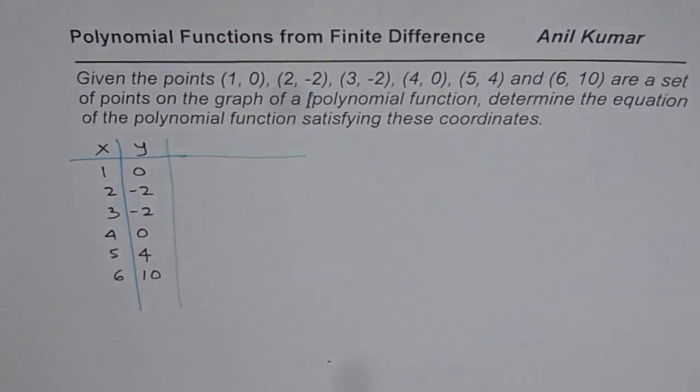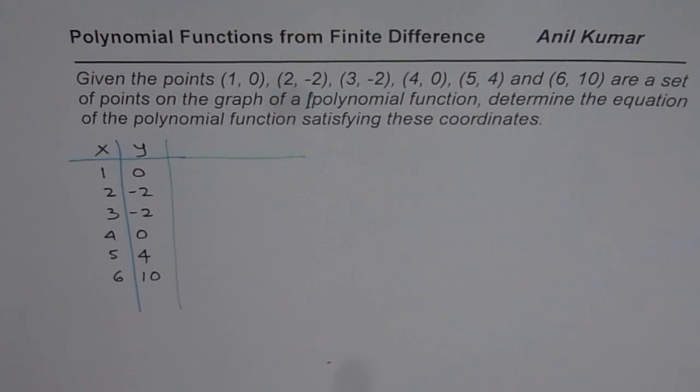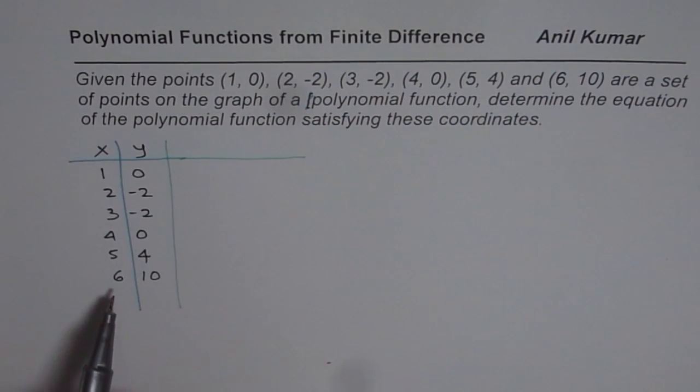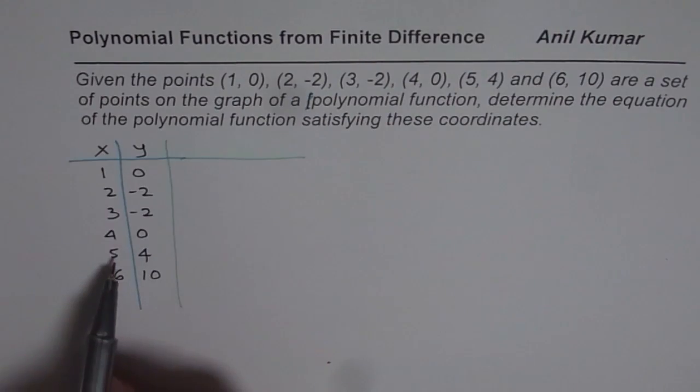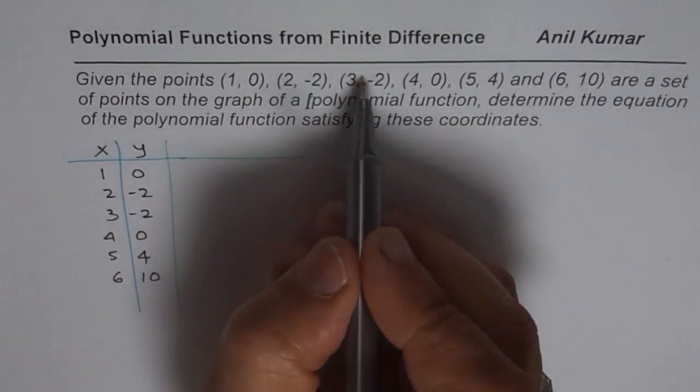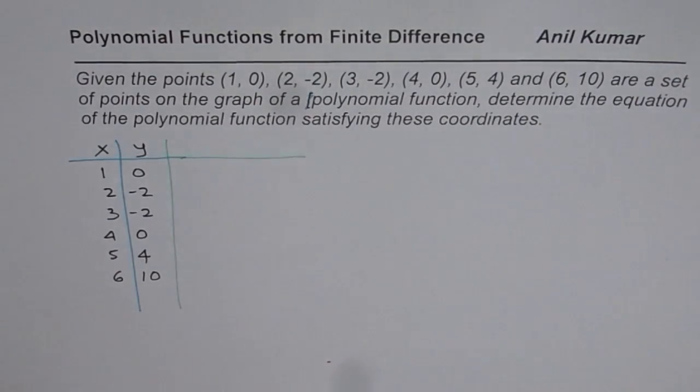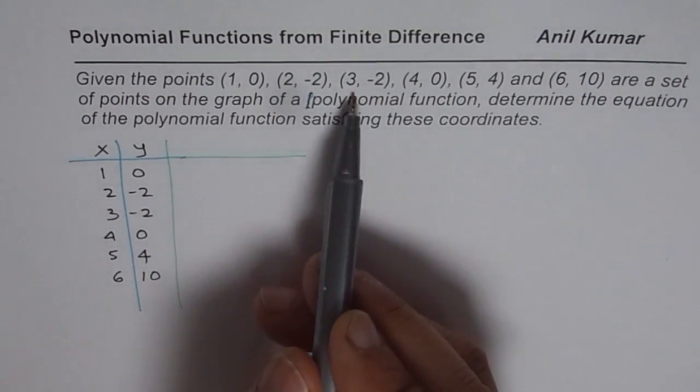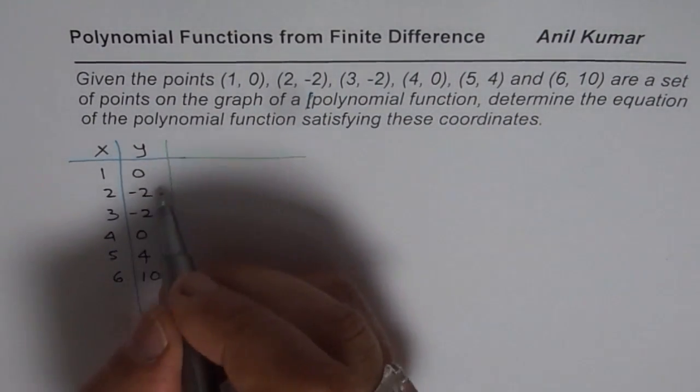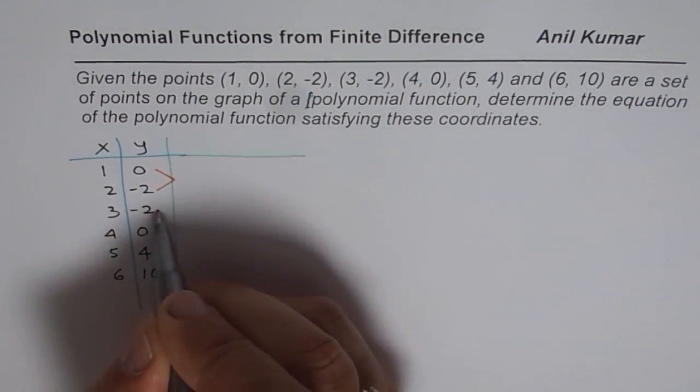So let's find the finite difference. Finite difference, as you know, is y2 minus y1. You should always check x values, they are going up by 1. That is how it should be arranged. At times in the test, they may be mixed up. For example, I could write this coordinate point before. It doesn't make a difference. But if you don't see that part, then you'll get wrong answer.